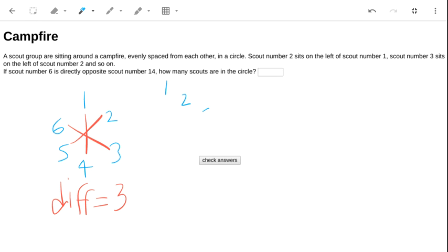Let's just check this with maybe ten scouts. So now it looks like one is opposite six, two is opposite seven, three is opposite eight, nine is opposite four, and ten is opposite five.